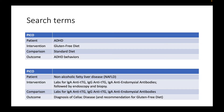Here are some PICO terms. My first search: patient ADHD, intervention gluten-free diet, comparison standard diet, and outcome ADHD behaviors. My second PICO: patient non-alcoholic fatty liver disease, intervention labs for IgA and IgG anti-tissue transglutaminase and IgA anti-endomysial antibodies, followed by endoscopy and biopsy to confirm celiac diagnosis, in comparison to just doing the labs. The outcome would be diagnosis of celiac disease and recommendation for a gluten-free diet.